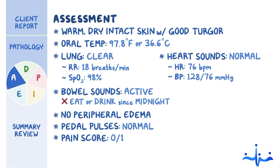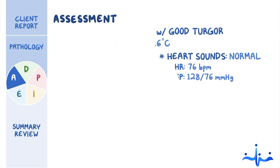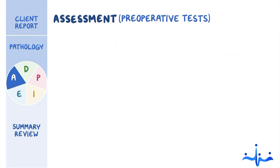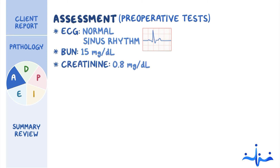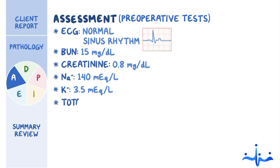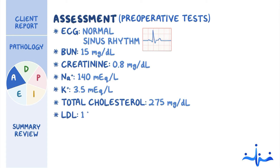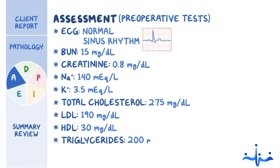His pain score is 0 out of 10. Reviewing his preoperative tests, you note ECG showed normal sinus rhythm. BUN 15 mg/dL, creatinine 0.8 mg/dL, sodium 140 mEq/L, potassium 3.5 mEq/L. Total cholesterol 275 mg/dL, LDL 190 mg/dL, HDL 30 mg/dL, and triglycerides 200 mg/dL.